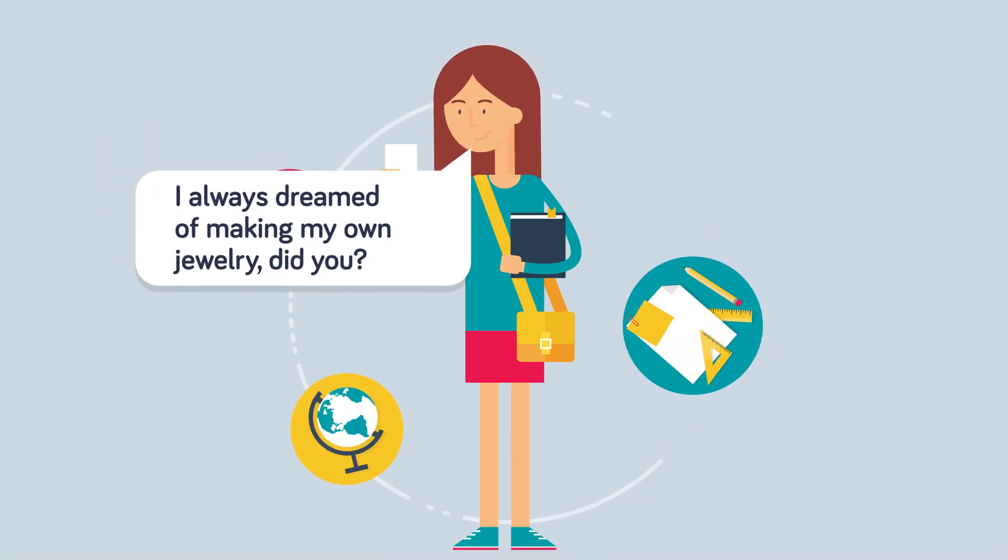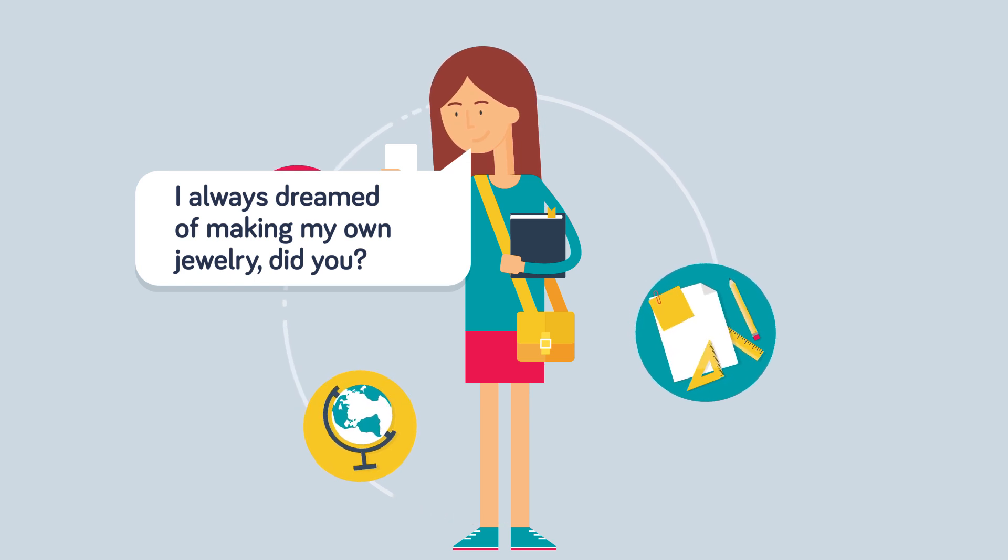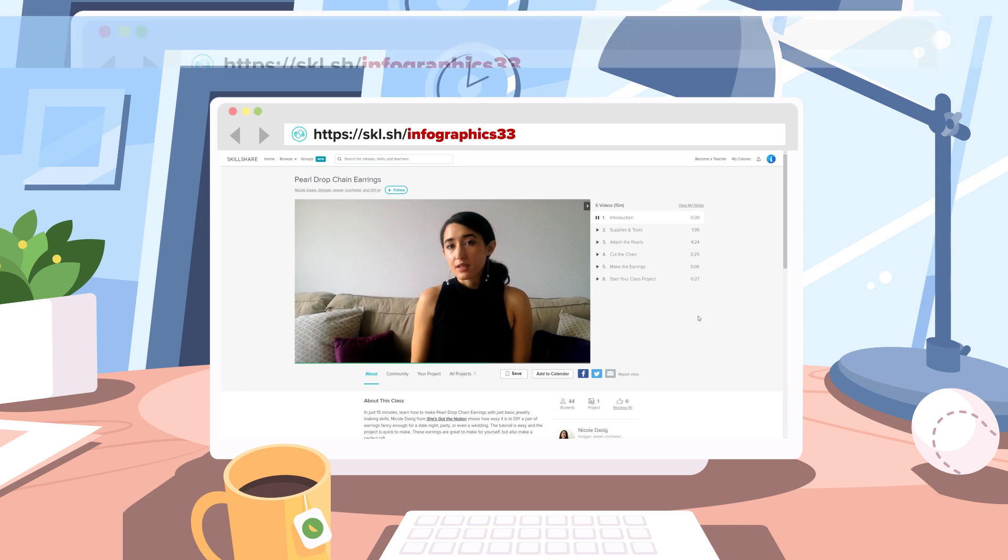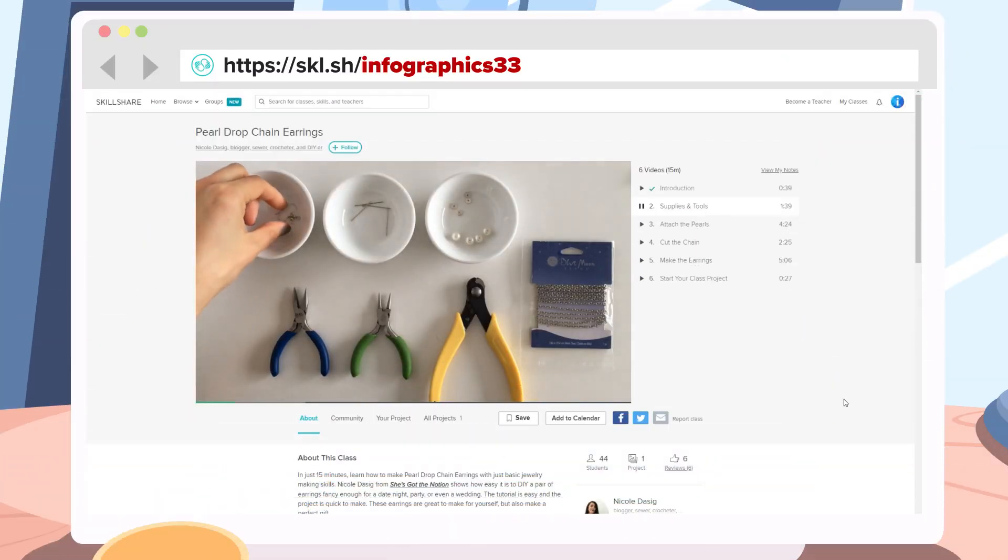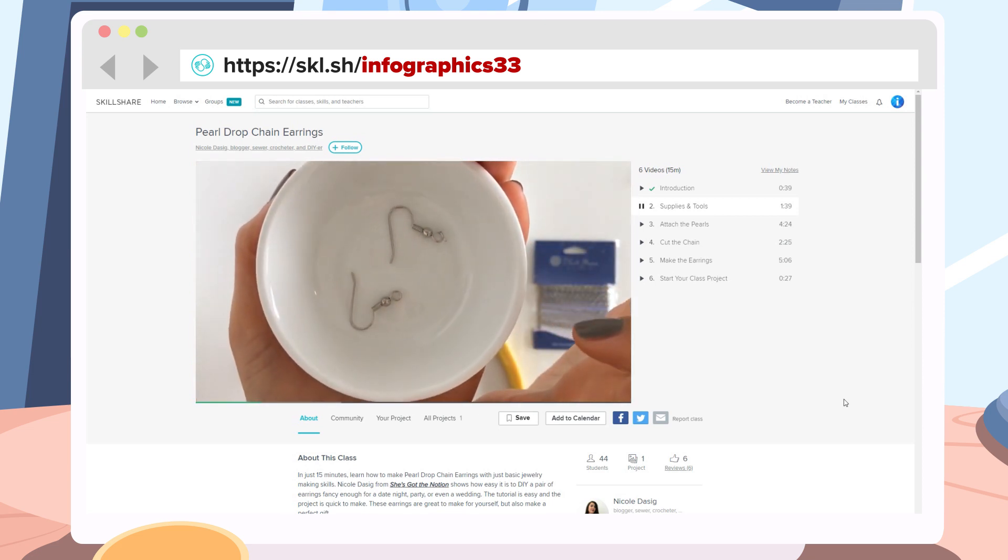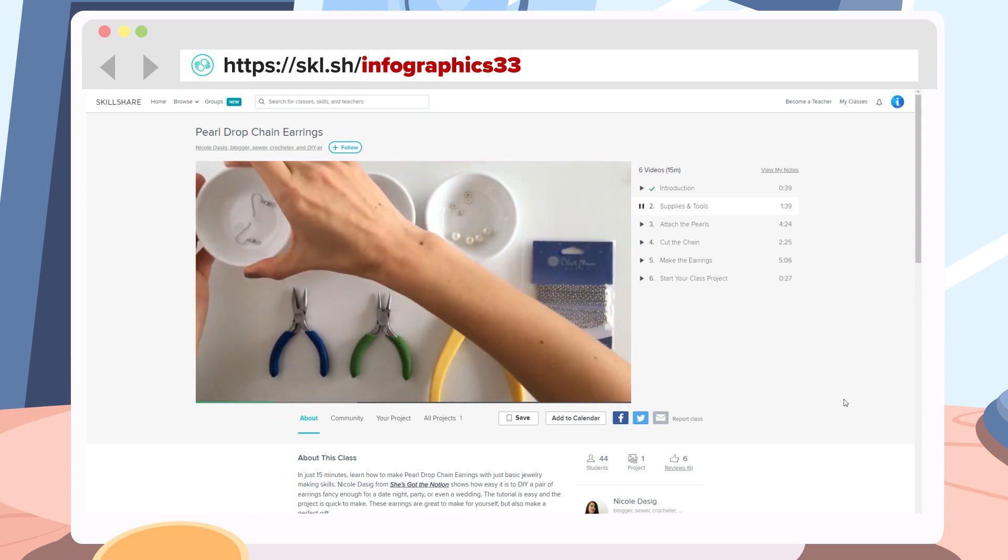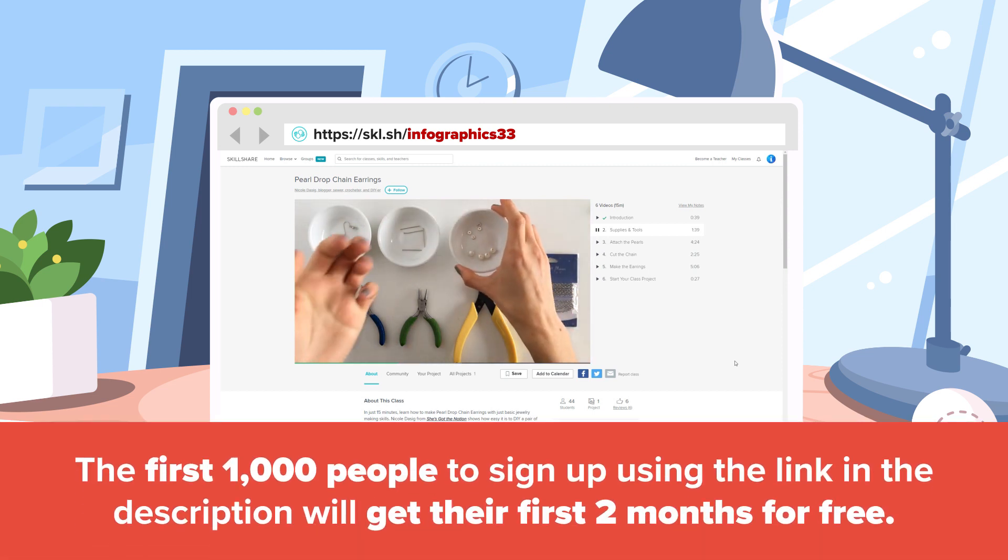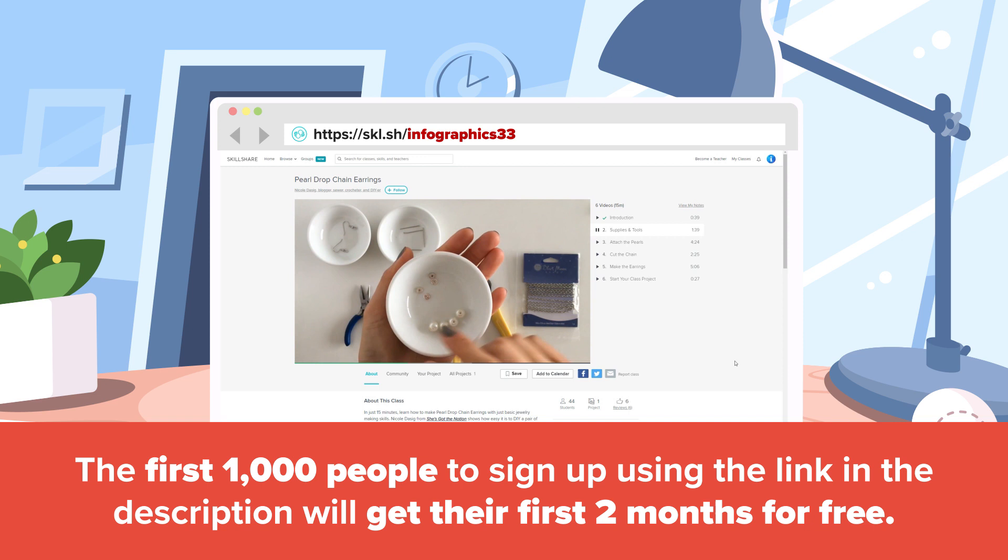And now that you know how diamonds are cut, how about learning how to incorporate them into your own jewelry? If you're curious about jewelry making, Skillshare has over 200 classes just on this topic, and an easy one to get into is called Pearl Drop Chain Earrings. In just 15 minutes you'll learn how to make pearl drop chain earrings with just basic jewelry making skills. This class is available only on Skillshare, an online learning community with over 20,000 classes in design, music production, crafts, and more. Premium Membership will give you unlimited access to topics that will improve your skills, and in the process, your life. The first 1,000 people to sign up by visiting Skillshare.com/Infographics33 or by clicking the link in the description will receive two months of Skillshare absolutely free. Join Skillshare and start learning today!